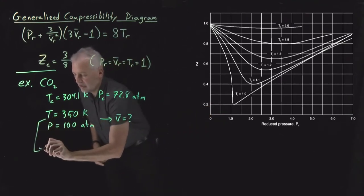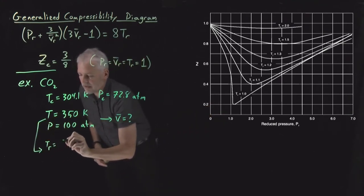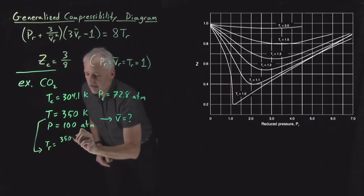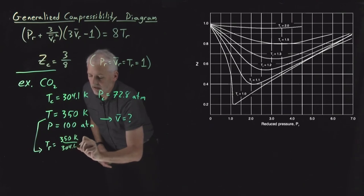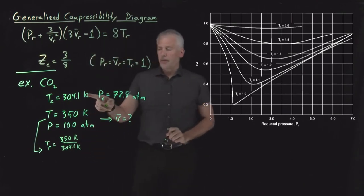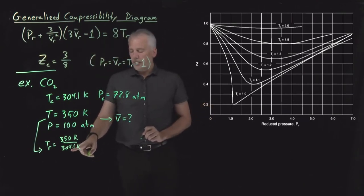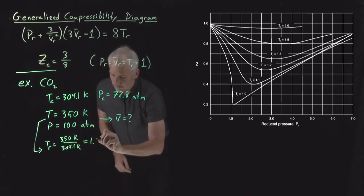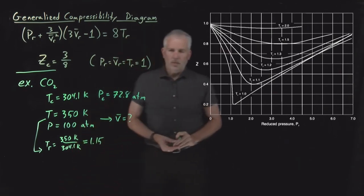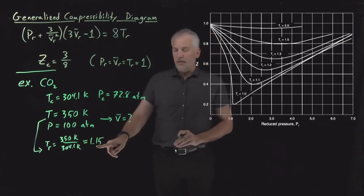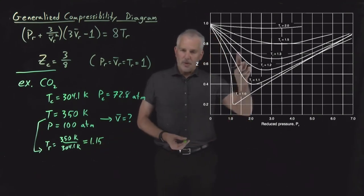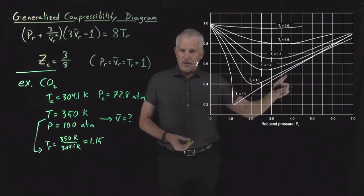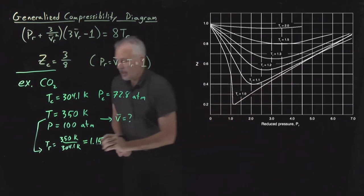But this generalized version of the van der Waals equation and this generalized compressibility factor diagram gives us a different approach for doing that. So if I have the gas at 350 Kelvin, I can say the reduced temperature is going to be temperature over critical temperature. So temperature divided by critical temperature, 350 over 304.1. That works out to about 1.15, so 15% above the critical temperature. That tells me which of these isotherms I'm living on, the gas is living on.